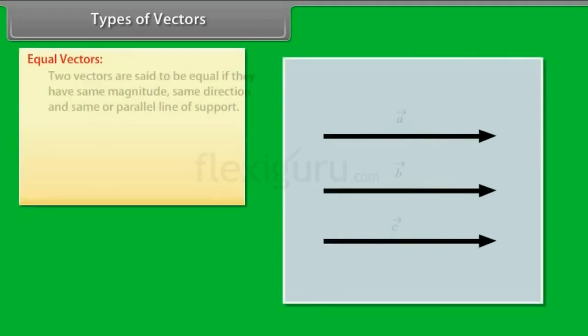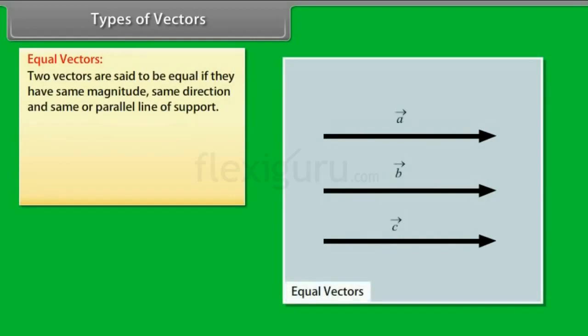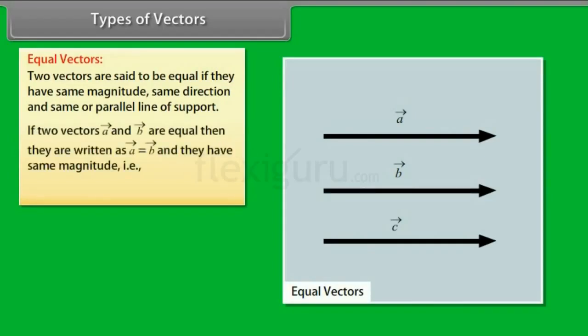Equal Vectors: Two vectors are said to be equal if they have same magnitude, same direction and same or parallel line of support. If two vectors A and B are equal then they are written as vector A equals vector B and they have same magnitude, that is mode of vector A equals mode of vector B.